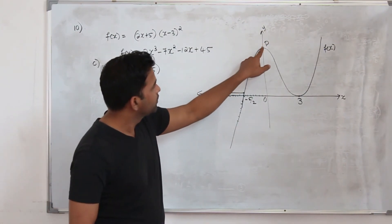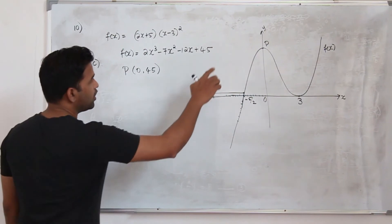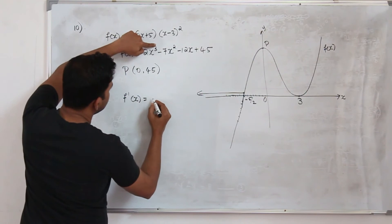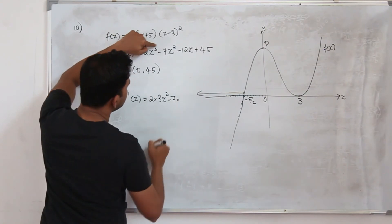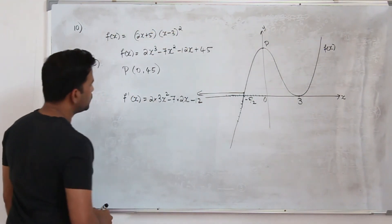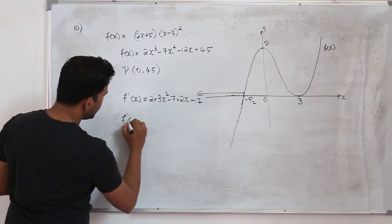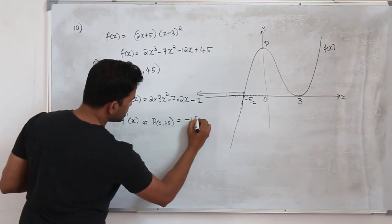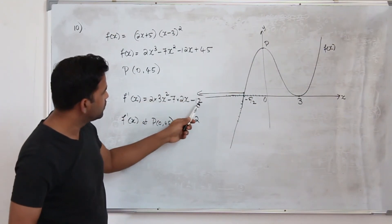Now they want you to find the gradient of the tangent at the point p. How do we find the gradient value at p? Differentiate the function. f dash of x is 2 times 3x squared, which is 6x squared, minus 7 times 2x, which is minus 14x, minus 12. The 45 will become 0. So your f dash of x at the point p of 0 is equal to minus 12. Because if you replace x by 0 everything will become 0. This is your gradient.